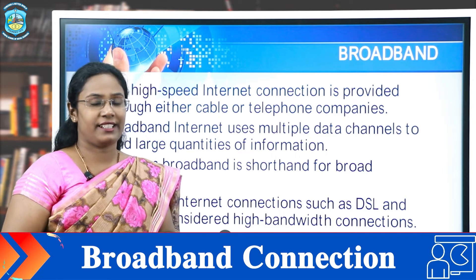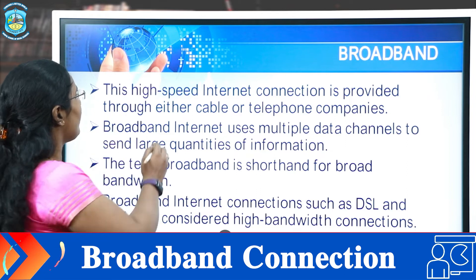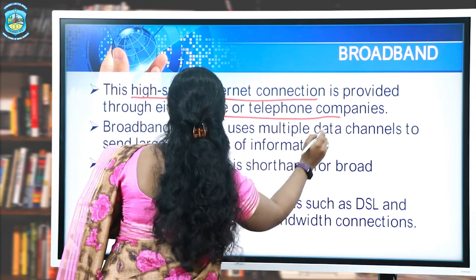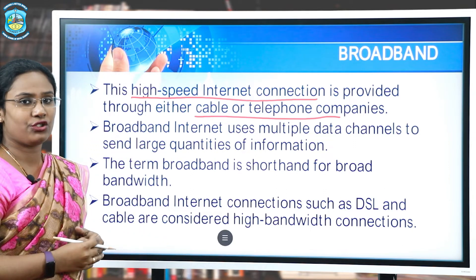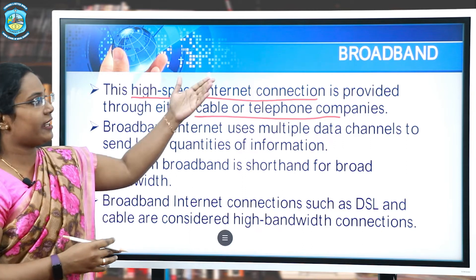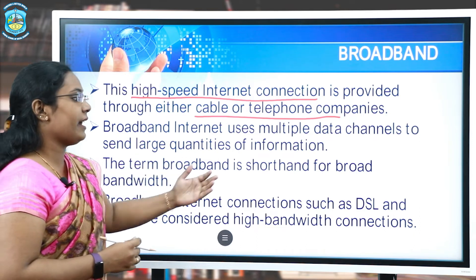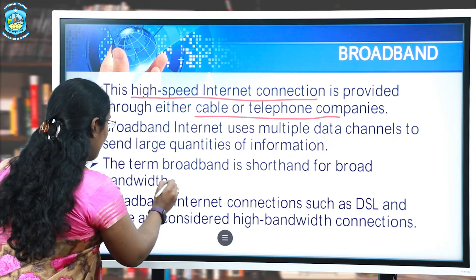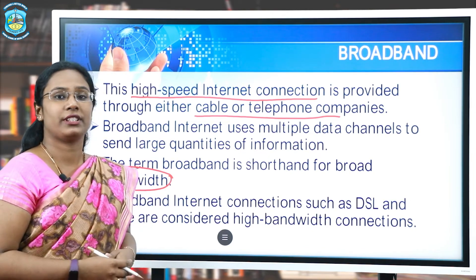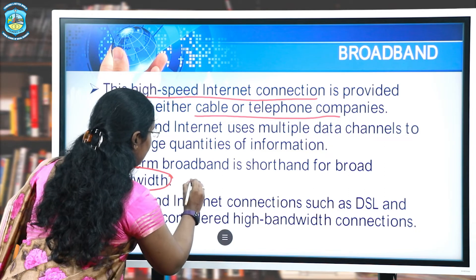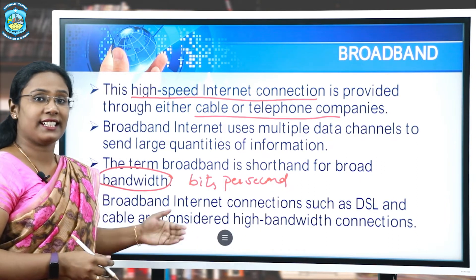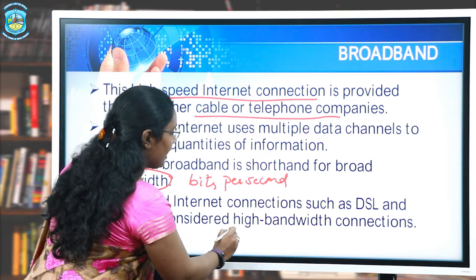Now let us see the most important internet connection called Broadband connection. It provides high-speed internet connection through either cable or telephone companies. Broadband internet connection uses multiple data channels to send large quantities of information. The term broadband is the short form of broad bandwidth. Bandwidth is a measure of how fast the information can be transmitted. In the digital world, broadband means bits per second. Broadband internet connections such as DSL and cable internet connections are considered high bandwidth connections.